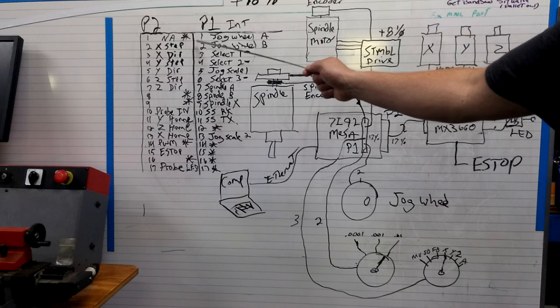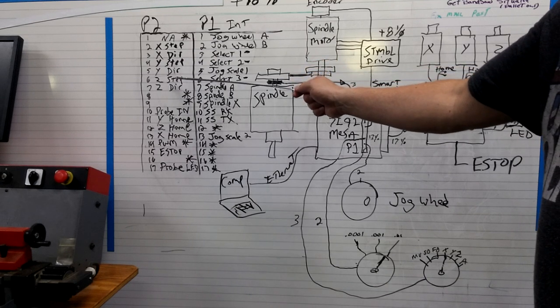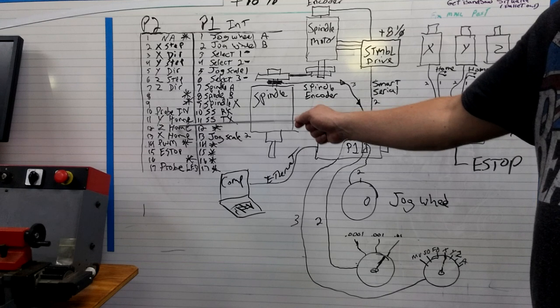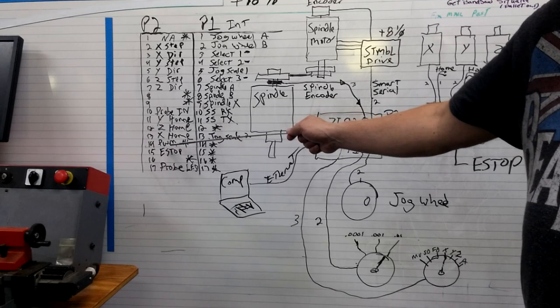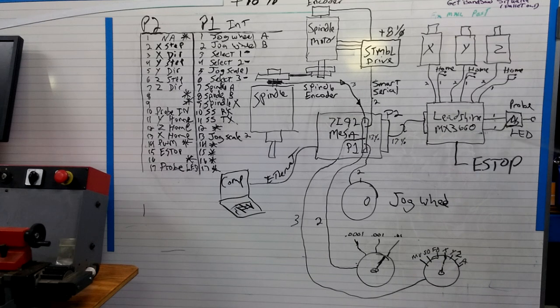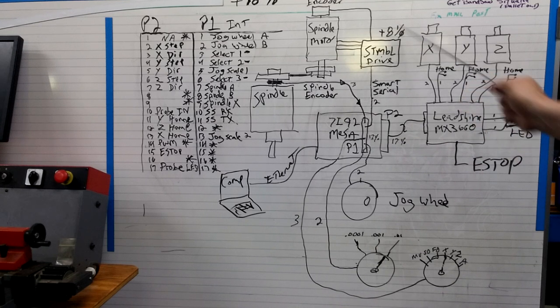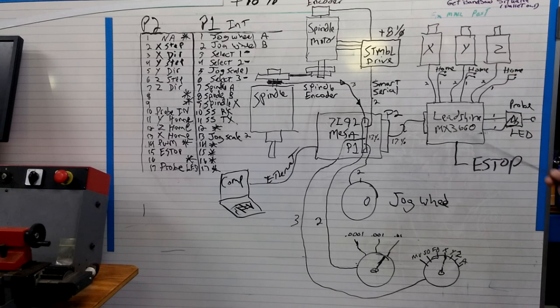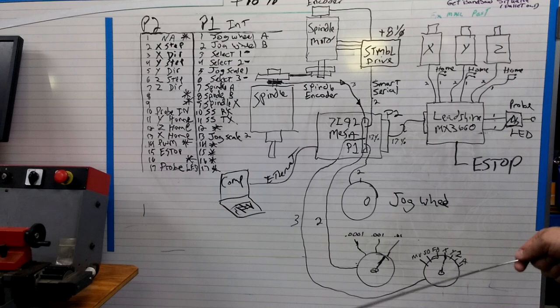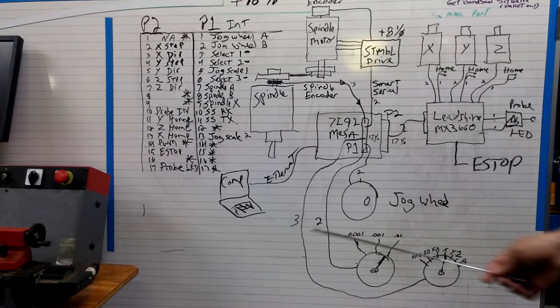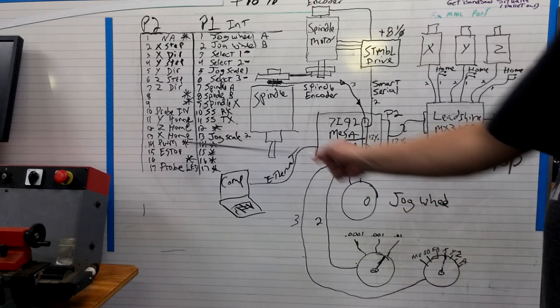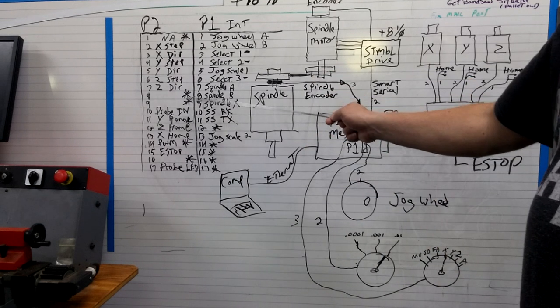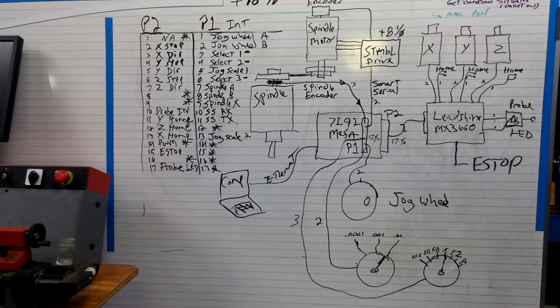The probe input and the LED on the probe is hooked into the Leadshine and also the e-stop. So if you look at P2, I've got x-step, x-dir, y-step, y-dir, z-step, z-dir, probe in, y-home, z-home, x-home. This has a PWM output because the Leadshine has an analog output for running like a VFD. This came with some other brushless DC drives that took analog in and they did not work very well, so I ended up going with the stumble drive as an experiment and it's been working really good. And then probe LED, and e-stop. So on port 2 I have 1, 2, 3, 4, 5 open IO yet that could be used for other things.